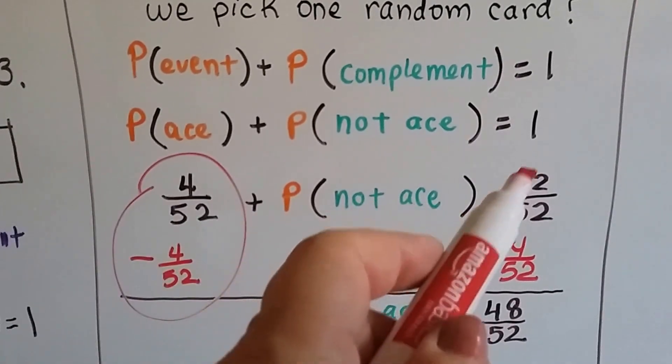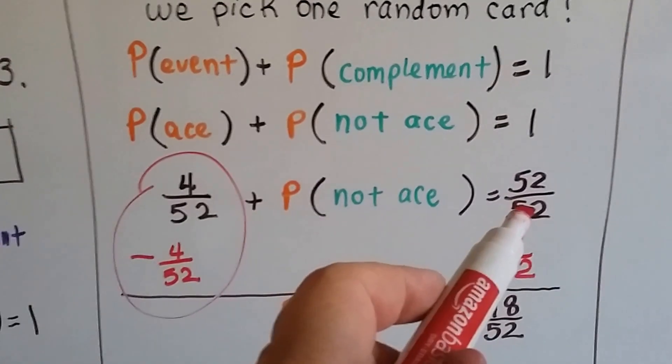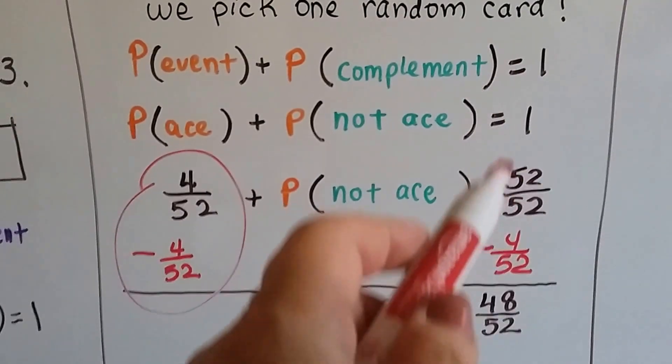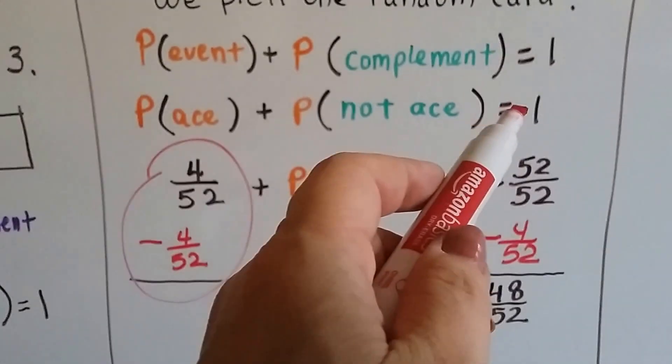the probability of not getting an ace equals 52 over 52. There's 52 cards total, and when the numerator and denominator are the same, it equals 1.